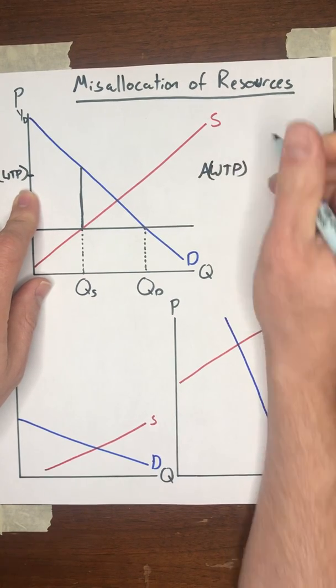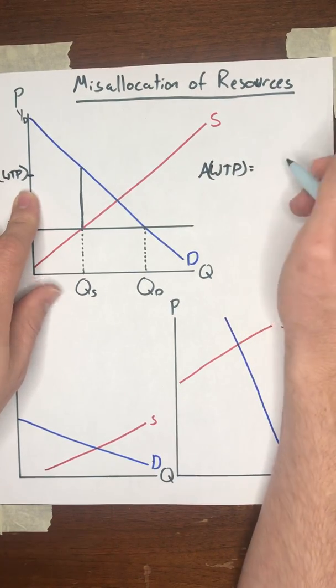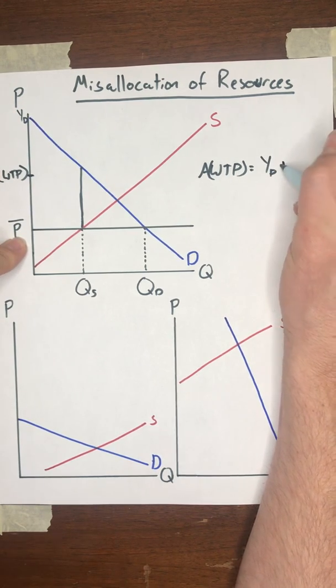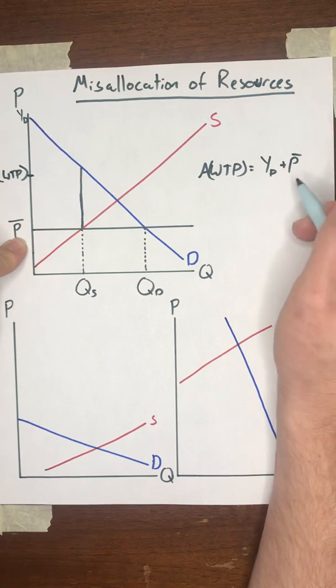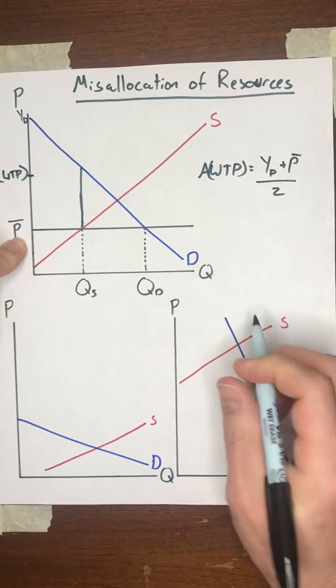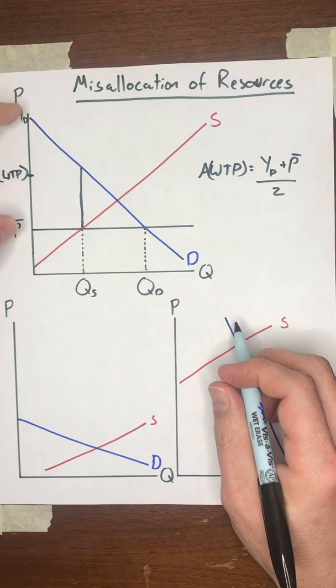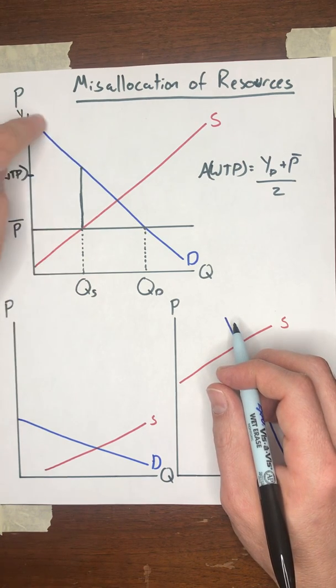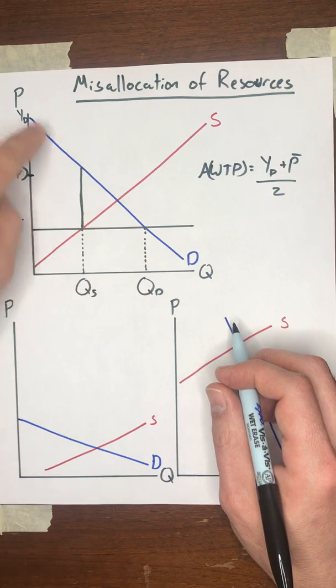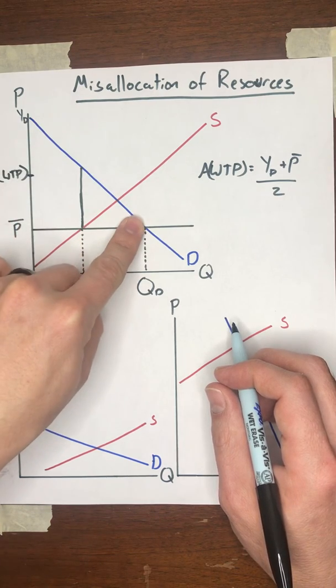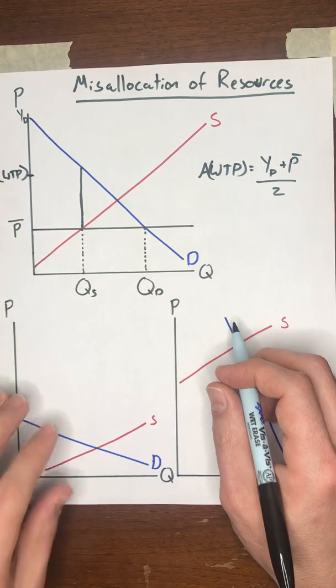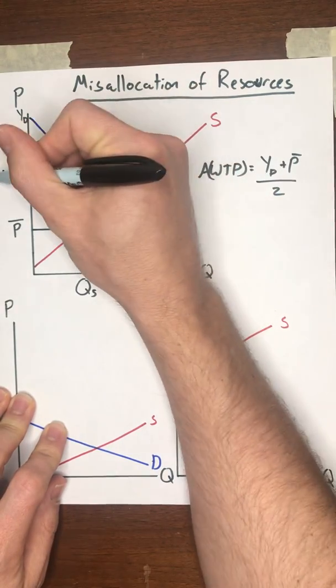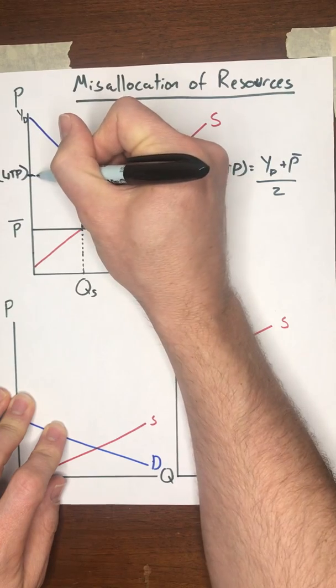The average willingness to pay is equal to the y-intercept of the demand curve plus the legislated price divided by two. That gives us the average of those two prices. And it turns out that's going to be the average value of the buyer along this demand curve, assuming that this demand curve is linear. It's a straight line. So if you allocate randomly, the average value to each consumer is right there.